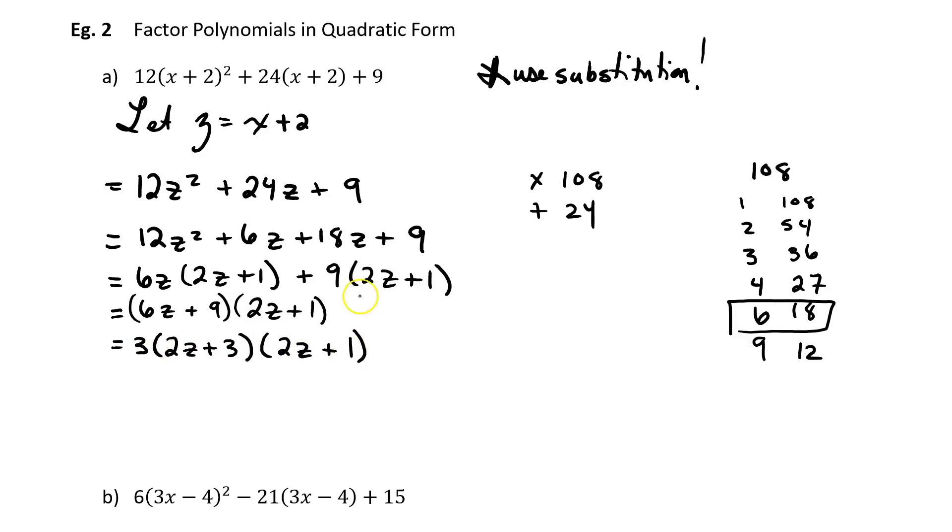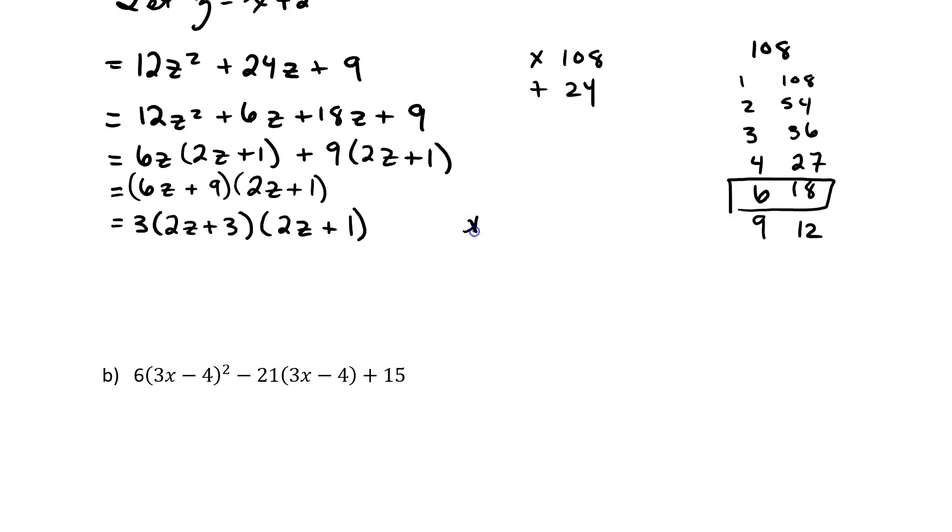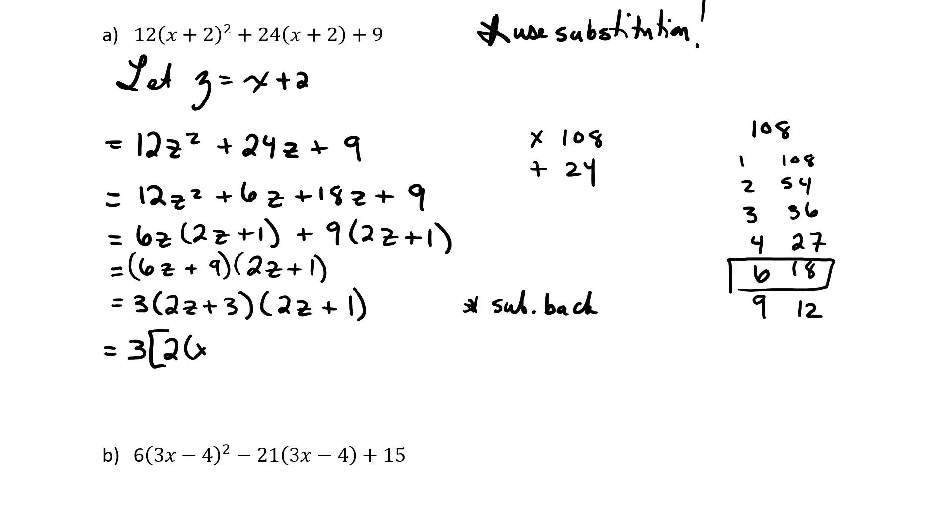And now, since I have z's, I can substitute back my z for x plus 2. Because, just like if I ask for a question to be done in fractions, I expect my answer to be in fractions. If I ask my question with x's, I expect my answer to have x's. So, at this point, what we can do is we can substitute back. So, we get 3. And then, I'm going to use the square brackets again just because we're going to have to write some things in. So, 2 times x plus 2 plus 3. So, I'm writing the exact same thing as this bracket here. But, instead of z, I'm writing x plus 2 because I'm substituting it back. Now, this one. 2 times z. But, instead of z, I'm going to put x plus 2, 2 times x plus 2 plus 1.